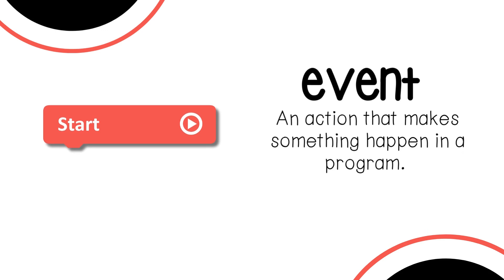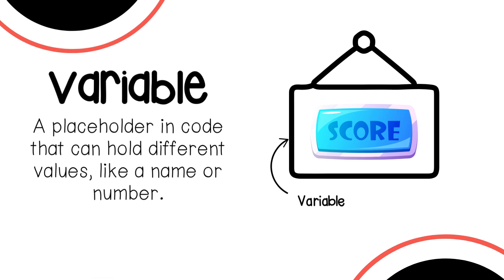An event is an action that makes something happen in a program. A variable is a placeholder in code that can hold different values like a name or number. For example, if you have a variable called score, it can hold different numbers as you play a game. At the beginning, score might be zero, but each time you win points, the number in the score box changes.